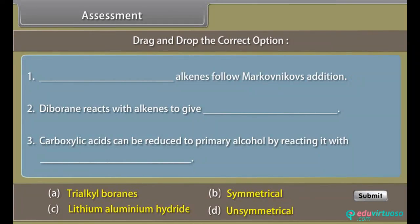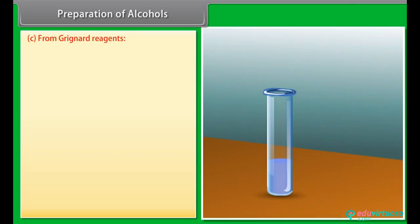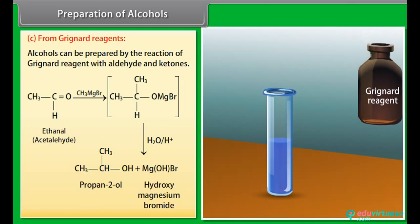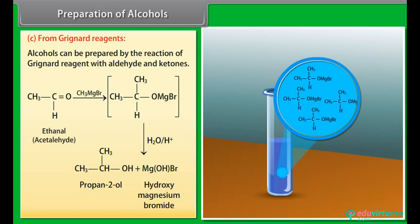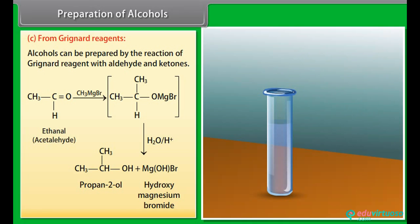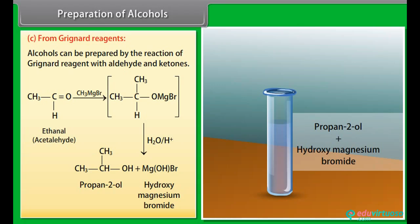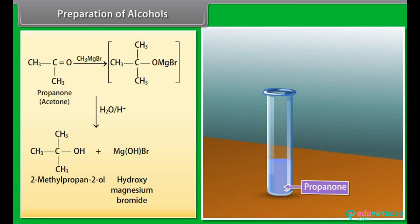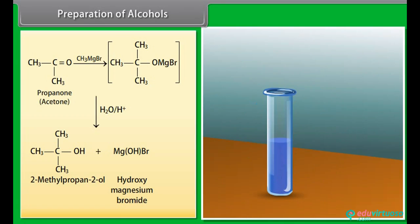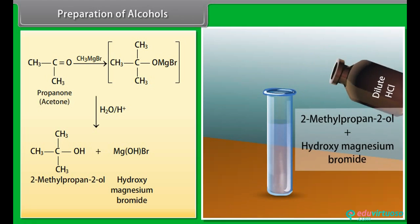Assessment. Preparation of alcohols from Grignard reagents. Alcohols can be prepared by the reaction of Grignard reagents with aldehydes and ketones. A Grignard reagent reacts with ethanal to form a product which decomposes with dilute HCl to give propan-2-ol and hydroxymagnesiumbromide. A Grignard reagent reacts with propanone to form a product which decomposes with dilute HCl to give 2-methylpropan-2-ol and hydroxymagnesiumbromide.